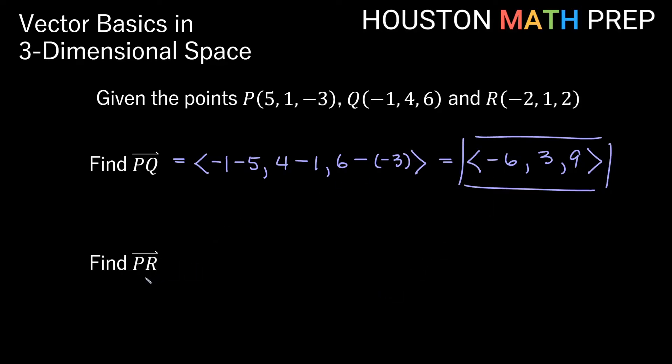If we look at the next one here, this is vector PR. So our initial point is now P and our terminal point is R. So we will take our R coordinates here, so we have negative 2, and we'll subtract our initial coordinate, which is 5. Here we'll have 1 for our y coordinate minus our initial y coordinate here, which is also 1. For our z component of our vector, we'll have our R coordinate, which is 2 minus our P coordinate, which is negative 3. And so now we'll just say what each component is. So we have negative 2 minus 5, that'll give us negative 7 for our x component. 1 minus 1 will give us 0, and 2 plus 3 here will give us 5. So we'll actually get a vector PR being negative 7, 0, positive 5.